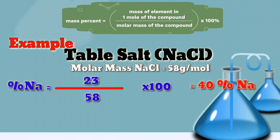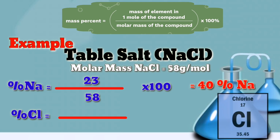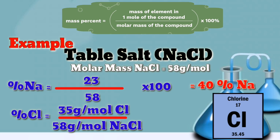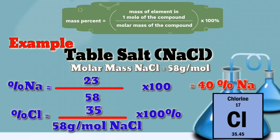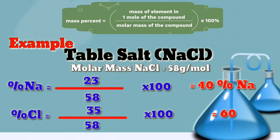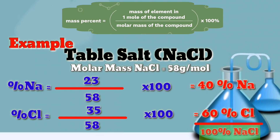Then let's get the percentage of chlorine. That equals the atomic weight of chlorine, which is 35.45, divided by the molar mass of 58 grams per mole, times 100 percent. So 35 divided by 58 times 100 is 60 percent chlorine. Adding it up: 40 percent sodium plus 60 percent chlorine equals 100 percent sodium chloride.